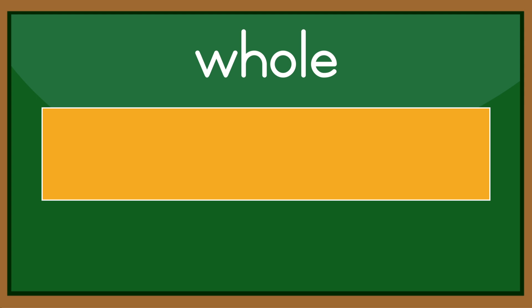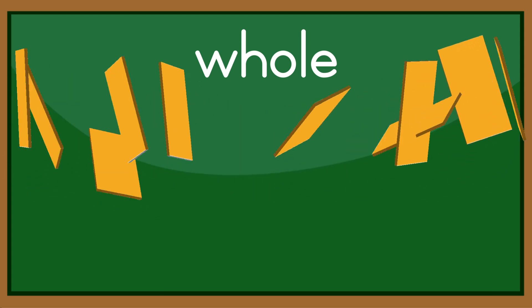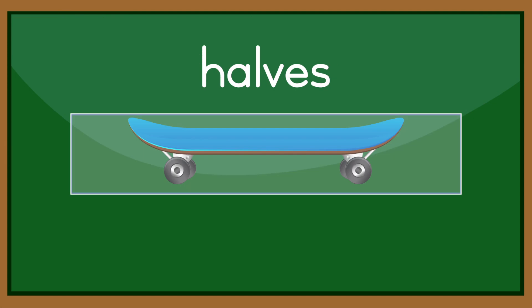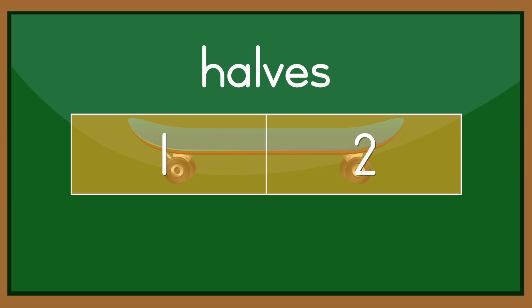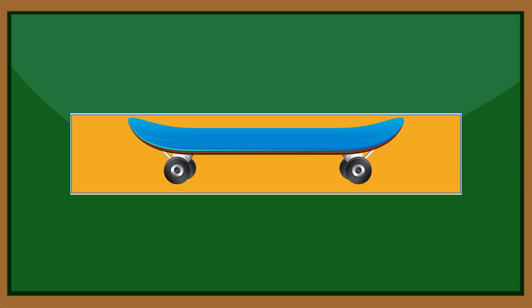Fractions are what you get when a whole object is divided into smaller parts. In this example, the whole is divided into two parts. Those parts are called halves. One half, two halves, which equal a whole.